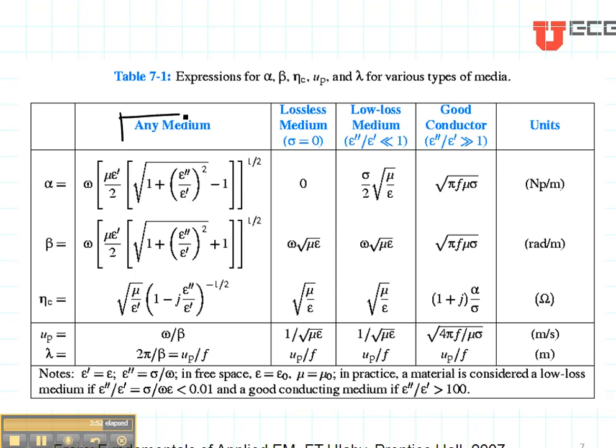The way we get all of these constants is we use Table 7.1 in your book. The column that we most often use is for any media. That's regardless of the alpha, of the epsilon and sigma values that you have.